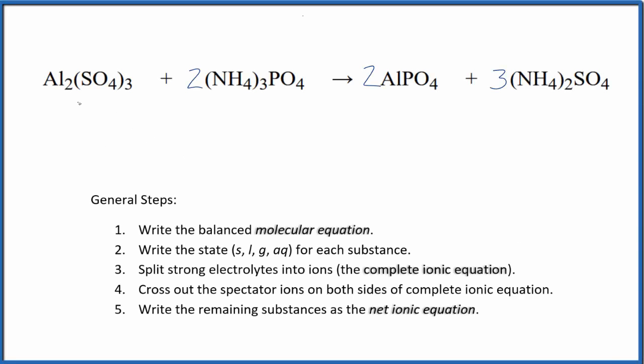To write the balanced net ionic equation for aluminum sulfate plus ammonium phosphate, the first thing we do is balance the molecular equation. This is the molecular equation. I've already balanced it. If you need help with that, there's a link in the description of this video.